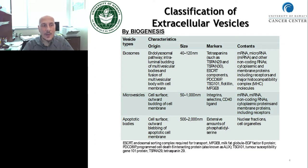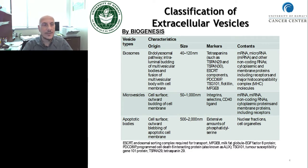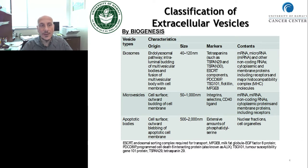There are also more recently identified EV categories: ectosomes, which are smaller than exosomes at between 10 and 20 nanometers, and large oncosomes, which are bigger than apoptotic bodies with a size range between one micron and 10 microns. Pure size alone is not sufficient to differentiate vesicle types because there are areas of overlap — a vesicle at 100 nanometers could be either an exosome or a microvesicle.